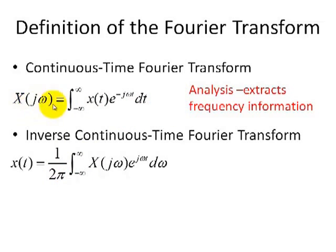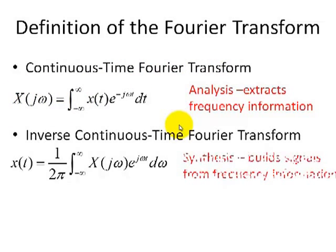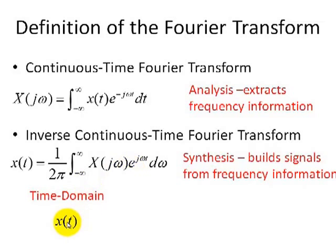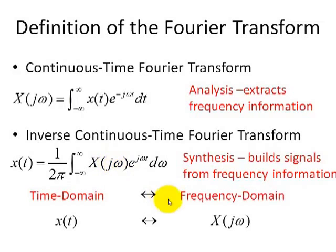This continuous-time Fourier transform is also called the analysis equation, which extracts frequency information. We note that this signal is described in the frequency domain by the Fourier transform. For the inverse Fourier transform, it's called the synthesis equation because it builds signals based on the frequency information. The time domain description x(t) is transformed into the frequency domain by the Fourier transform, and we denote it as cap X, a function of omega.